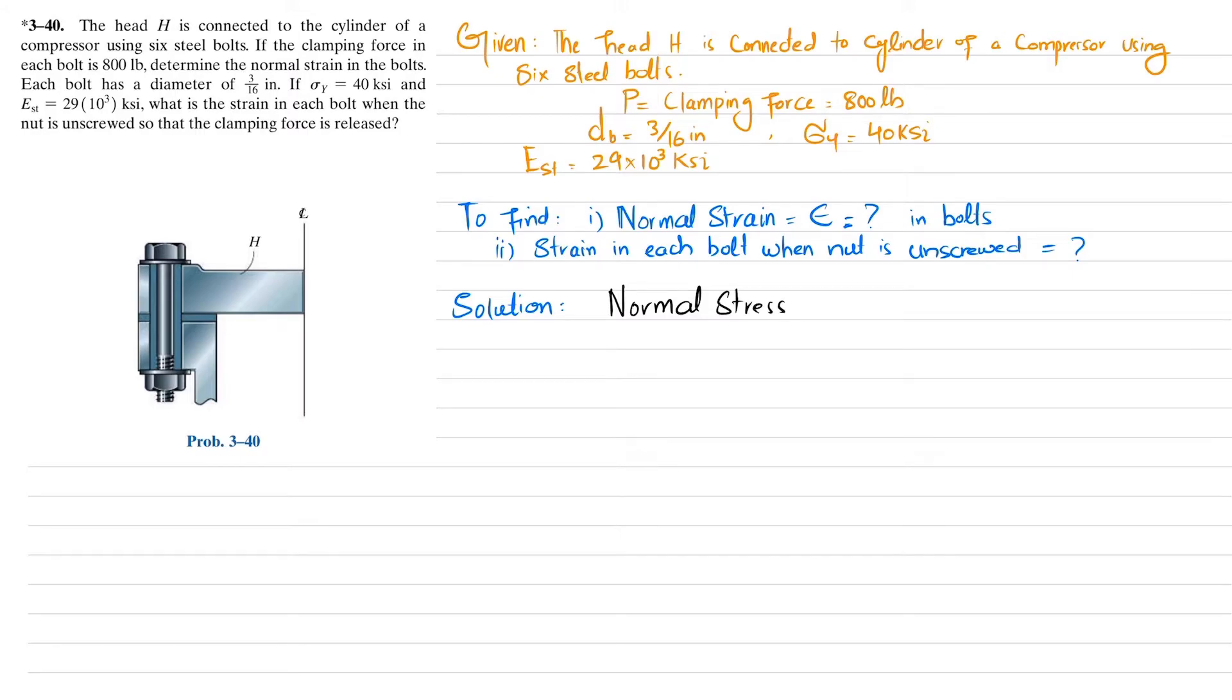Normal stress created in the bolt is represented as sigma, and sigma equals P/A. P is 800 pounds, and area is π/4 times d squared, where d is 3/16 inch. When you solve this, the stress comes out to be 28.97 ksi. This is the stress generated in each bolt.